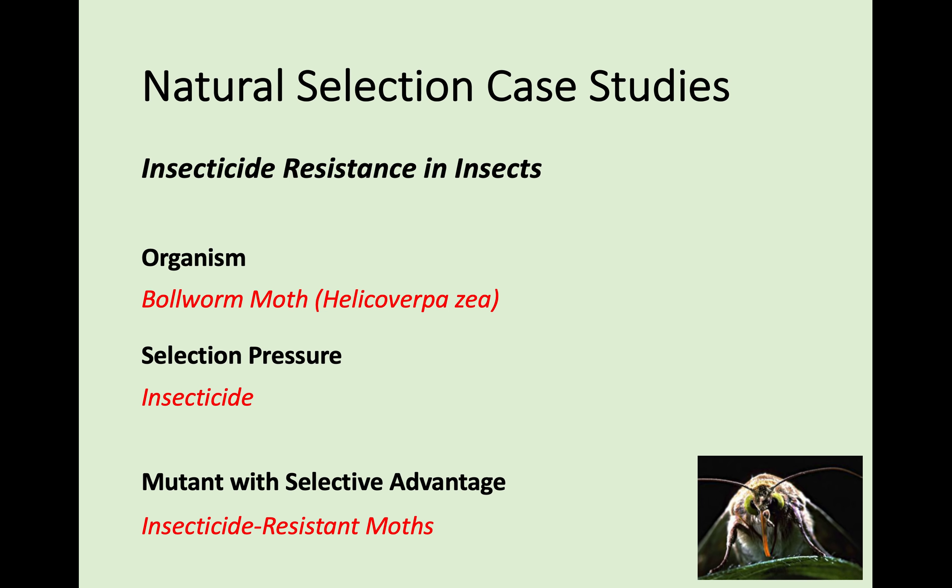On a very similar note, using insecticides to kill insects that eat your plants: there are some moths that are resistant to insecticide. If we use all this insecticide, that's a selection pressure on the population of moths. Those mutants resistant to insecticide survive, they have a selective advantage, they reproduce, and we end up with more moths resistant to insecticide. That's natural selection in real life.